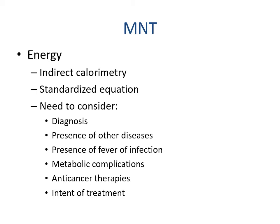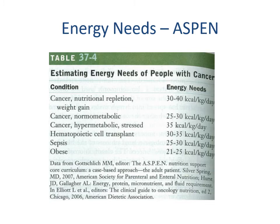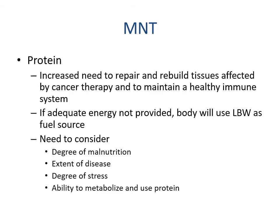For determining energy needs, indirect calorimetry is preferred — Moffitt Cancer Center does use it — but standardized equations like the Mifflin-St. Jeor can also be used. Considerations include the patient's diagnosis, comorbidities such as heart disease or diabetes, fever or infection, metabolic complications, any anti-cancer therapies, and the patient's long-term treatment goals. In most cancer cases, caloric needs are increased due to weight loss concerns, hypermetabolism, and treatment-related stress.